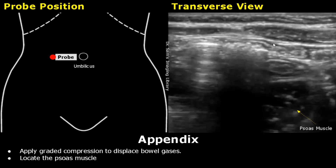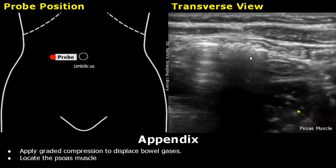Locate the psoas muscle by keeping the probe in this manner. Here you will find the psoas muscle. This is the dirty shadowing due to bowel gases, and you can also see some bowel loops.